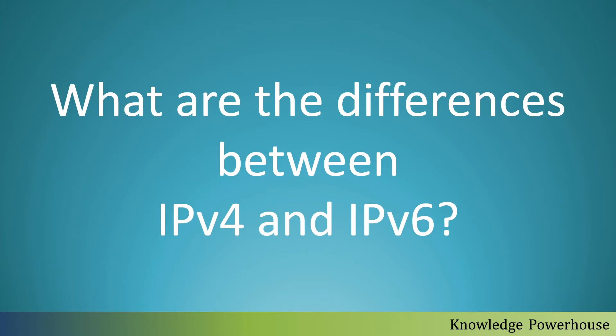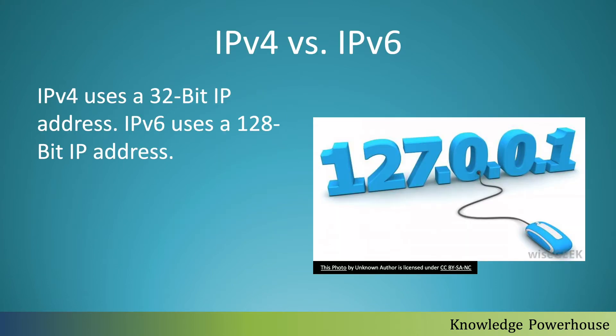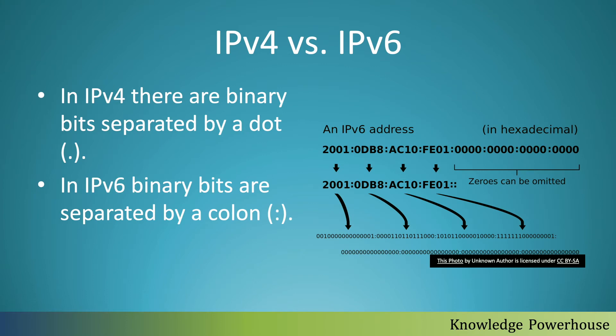IPv4 uses a 32-bit IP address — as you can see in the picture, there are four digits. IPv6 uses a 128-bit IP address, which is much bigger, so the range of addresses is far larger in IPv6. IPv4 addresses have almost been exhausted. In IPv4, the binary bits are separated by a dot.